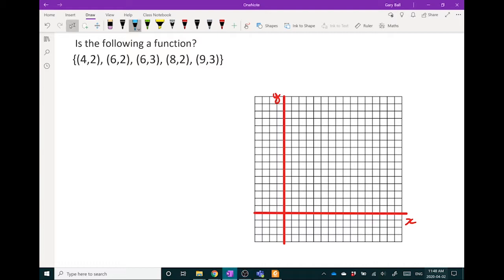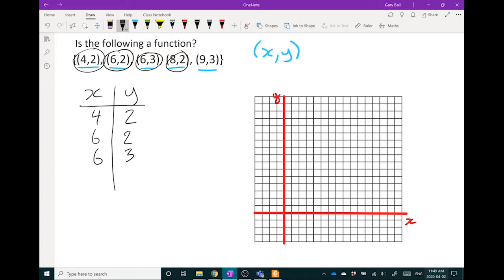Let's look at a different type of question. Here is a list of ordered pairs, essentially points on a graph. Remember, we always list them as x first and then y. And I want to know, do those ordered pairs give me a function or not? I'm going to put them into a chart here that makes it a little easier for you to understand. 4 and 2, that's one pair, x is 4, y is 2. Next pair is 6 and 2. Next pair is 6 and 3. Next pair is 8 and 2, and my last pair is 9 and 3.